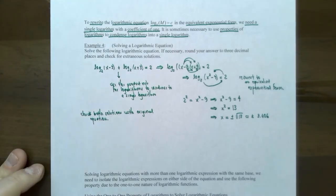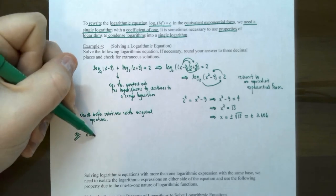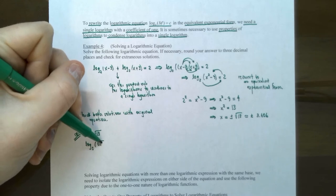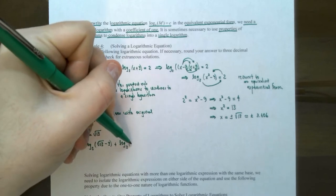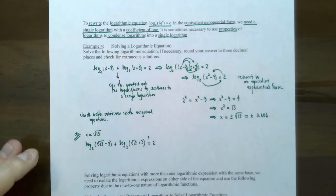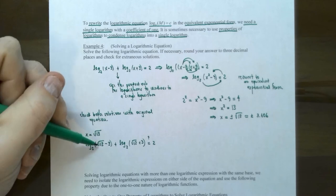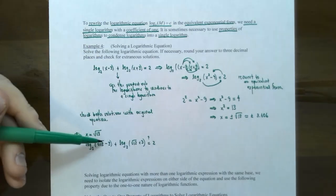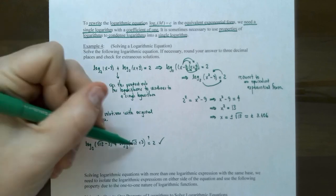We know we have to check our answers with logarithmic equations. Let's check x equals positive square root of 13. Go back to the original equation: log base 2 of (square root 13 minus 3) plus log base 2 of (square root 13 plus 3) — does this equal 2? The arguments must be positive for this particular x value. Square root of 13 is about 3.606, so minus 3 is still positive, and square root of 13 plus 3 is also positive. So if you check the answer, it will be fine because both arguments are positive.